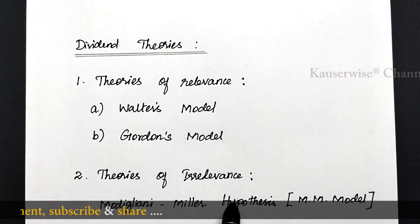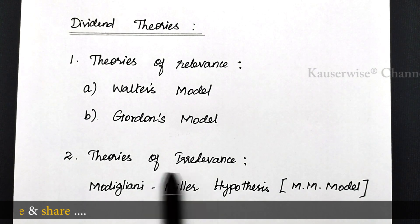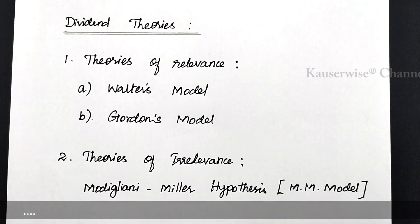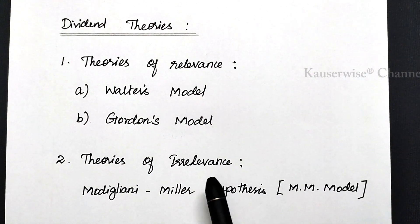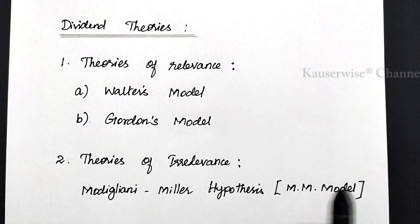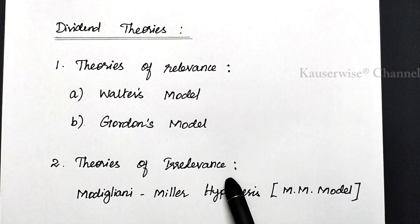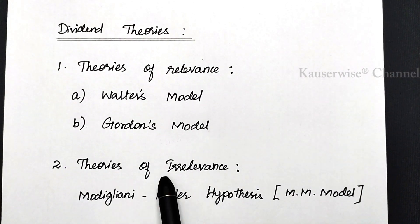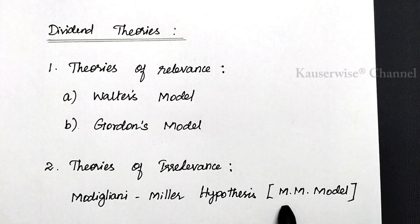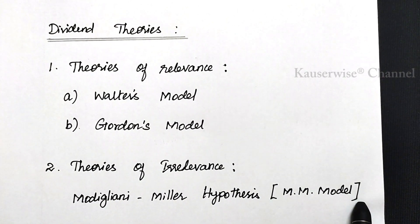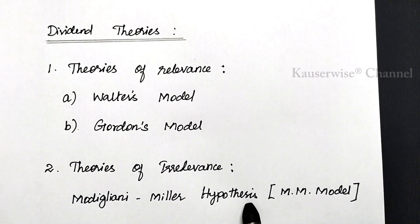The second theory is theories of irrelevance. Theories of irrelevance means the dividend policy is irrelevant and it does not affect the market value of equity shares. Under this we have one model, that is the MM model — the Modigliani-Miller hypothesis model.